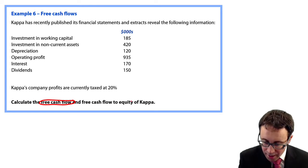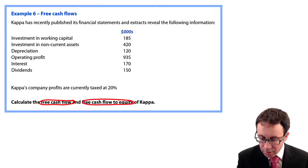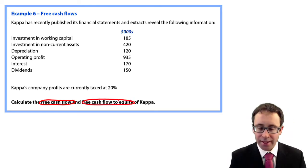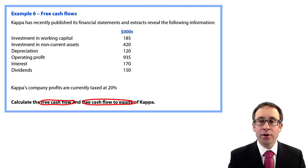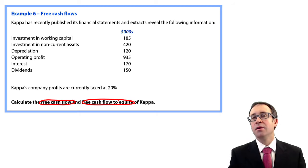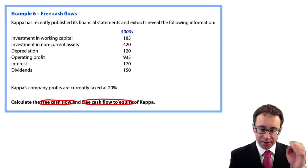And then we want to work out the free cash flow to equity, whereby we start with the free cash flow and then we deduct any interest payments because then what is left is everything that is available to the equity holders.